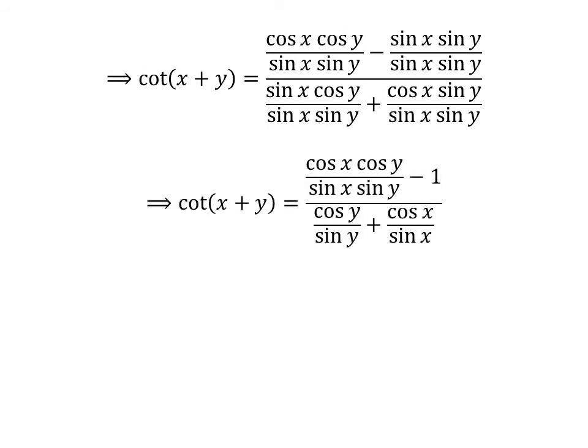After cancelling out the common factors, we are left with cotangent of x plus y is equal to cosine of x times cosine of y upon sine of x times sine of y minus 1 upon cosine of y upon sine of y plus cosine of x upon sine of x.